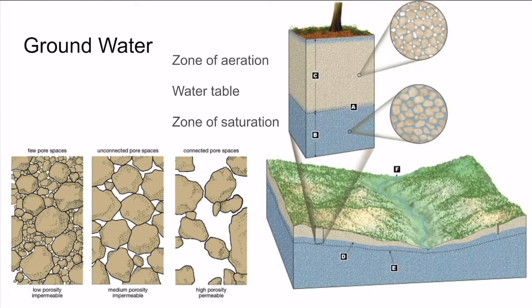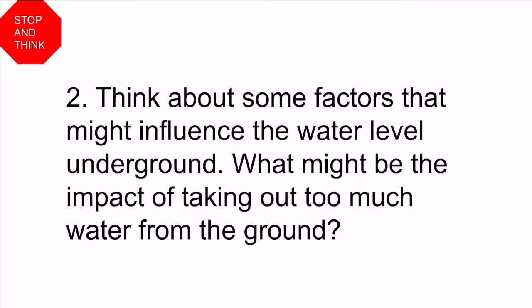As water infiltrates through the ground, it first passes through the zone of aeration at the very top — mostly air, but a bit of water stays inside. Gradually, as water flows deeper, it stops on impermeable surfaces and begins to accumulate as the zone of saturation. The boundary between these zones is called the water table. I'd like you to stop and think about factors that might influence the water level underground, and what might be the impact of taking out too much water from the ground. Pause, jot down a few notes, and then continue.